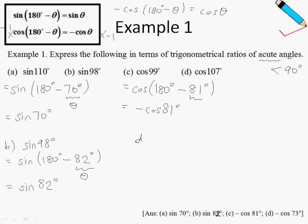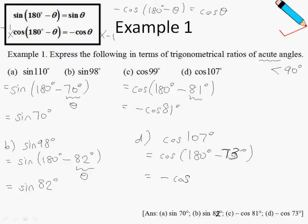Cosine of 107 degrees can be written as cosine of 180 degrees minus 73 degrees. In this case, theta is 73 degrees, so the final answer is negative cosine 73 degrees.